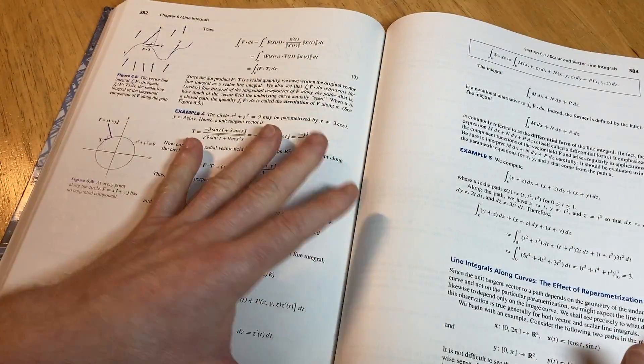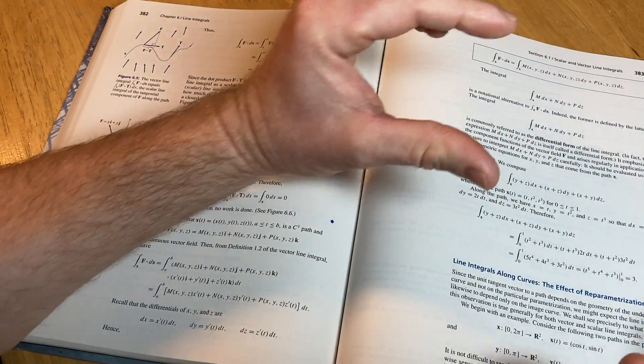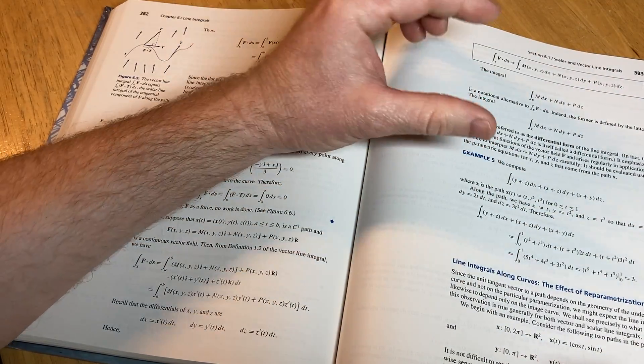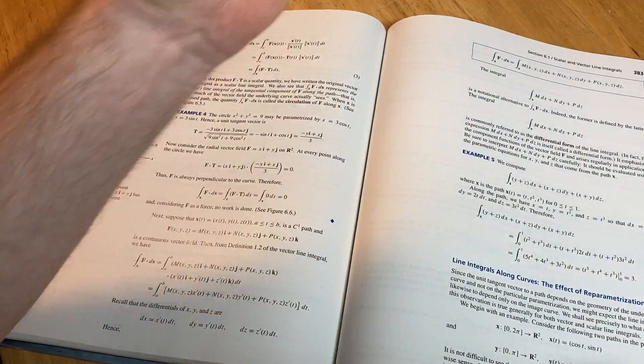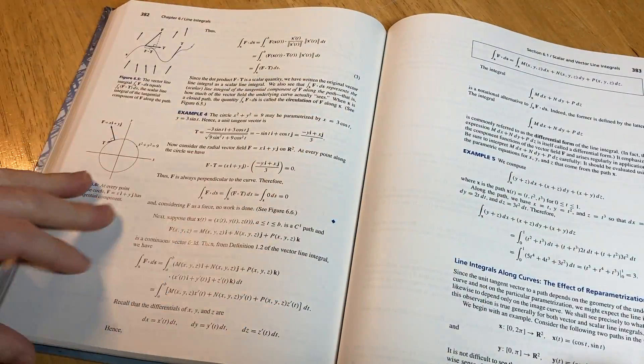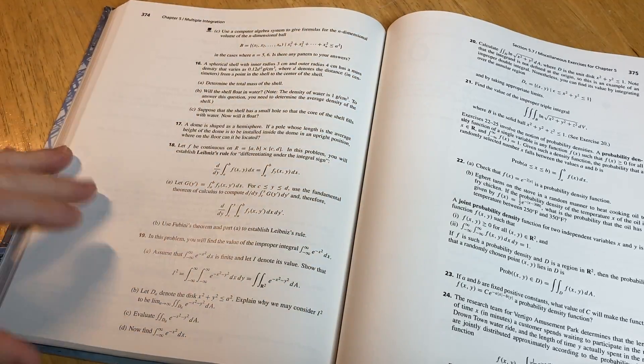That's not to say you still don't need another book. I do recommend that you have one of those big, thick books like Stewart's calculus or Larson's calculus on top of this book.